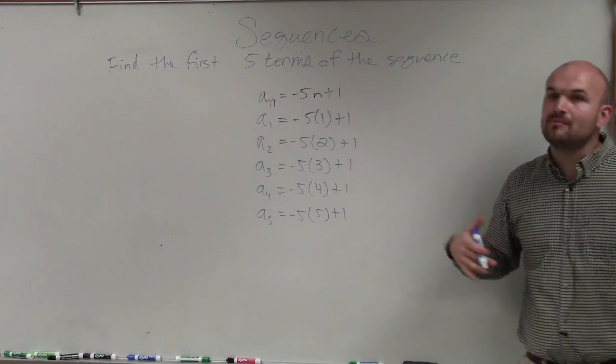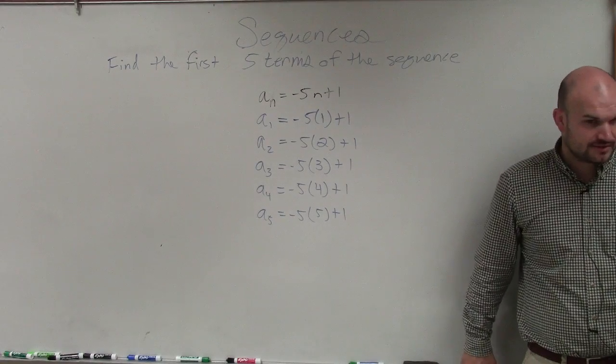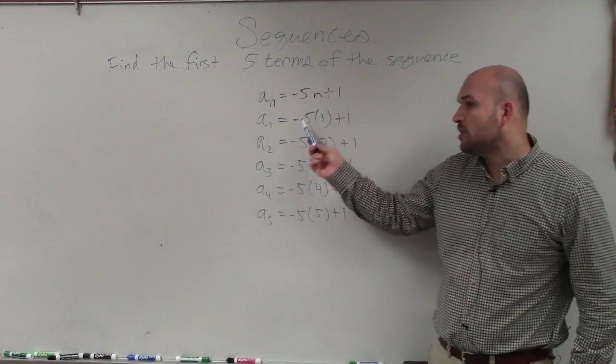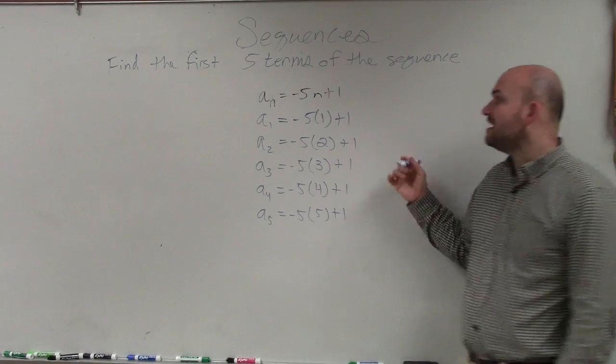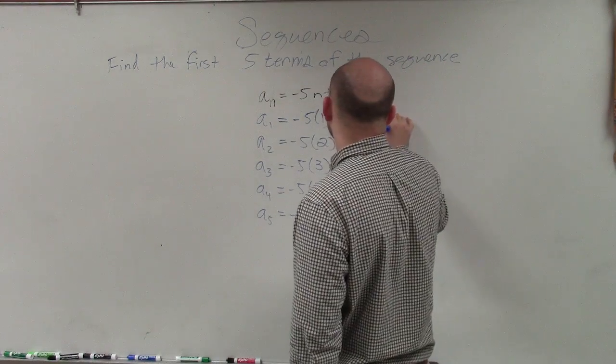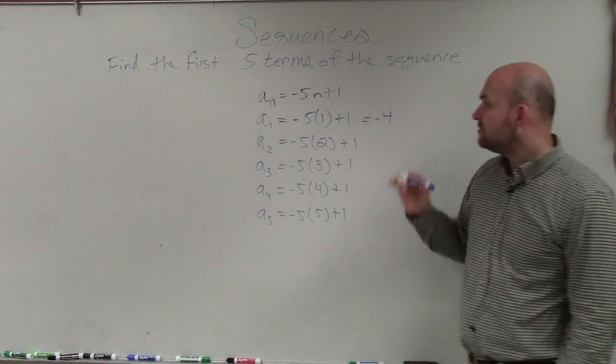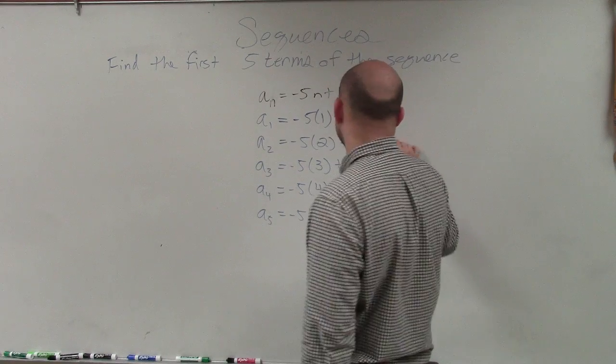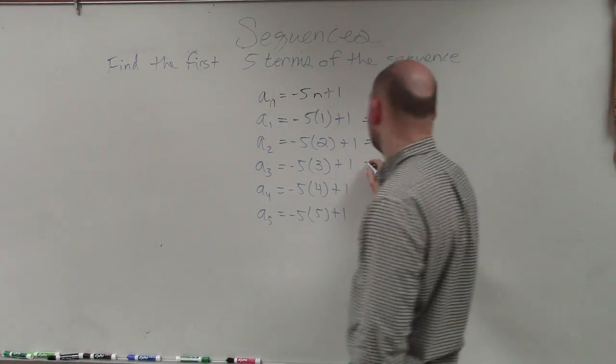And now we just need to evaluate. Now remember, when we evaluate, we have to make sure we apply the order of operations, all right? So remember, we're multiplying first, then we're adding. So negative 5 times 1 is negative 5, plus 1 is negative 4. Negative 5 times 2 is negative 10, plus 1 is negative 9. Negative 5 times 3 is negative 15, plus 1 is negative 14.